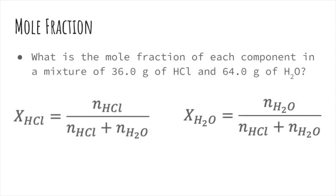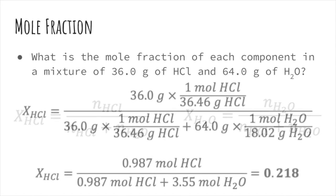To find the mole fraction of each component, we'll need to figure out how many moles of each component there is. The moles of HCl divided by the total moles is the mole fraction of HCl. The moles of H2O divided by the total moles is the mole fraction of H2O.